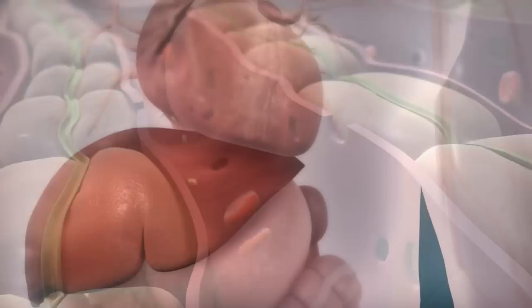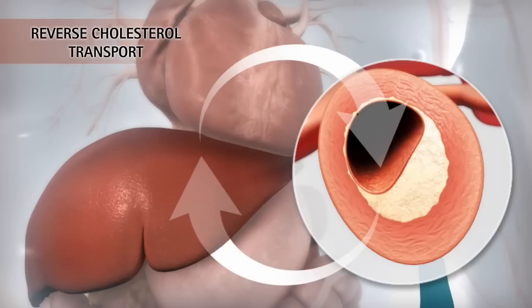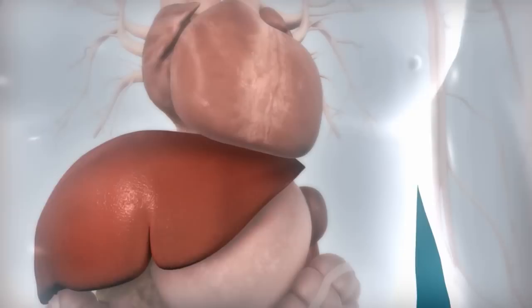HDL plays a critical role in reverse cholesterol transport by delivering cholesterol from plaque in the peripheral macrophages to the liver, where it is processed for excretion from the body. The net effect of HDL in the reverse cholesterol transport pathway is the removal of cholesterol from plaque and the potential reduction of cardiovascular risk.